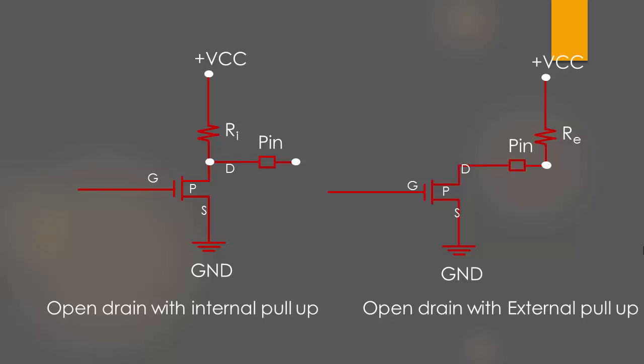These days almost all MCUs support internal pull-up resistors for every GPIO pin, so you just need to use the GPIO configuration register to activate or deactivate them. If your MCU doesn't support internal pull-up, which is most unlikely for modern MCUs, then you may think of adding an external pull-up resistor by your hand.